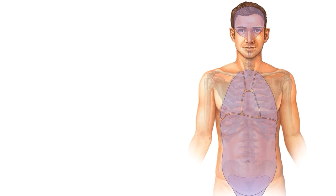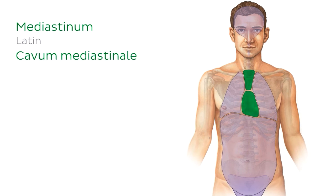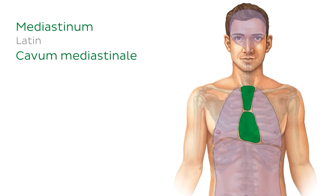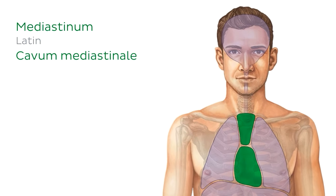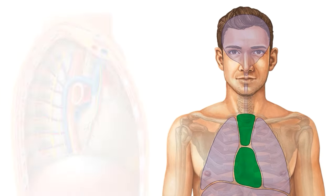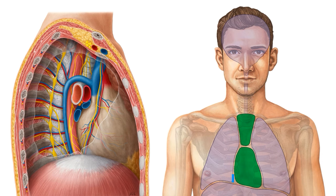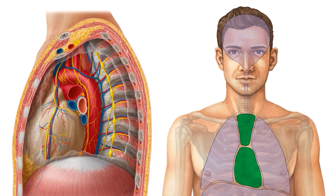So let's get down to business and see what the fuss is all about. We've established that the mediastinum is located roughly on the midline of our body, between the pleural cavities of the thorax. In our tutorial today, we're going to be looking at the anatomy of this space with these two illustrations, with both right and left lateral views of the thorax.